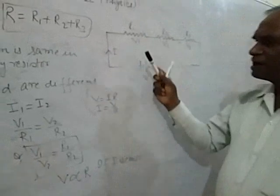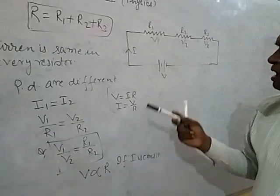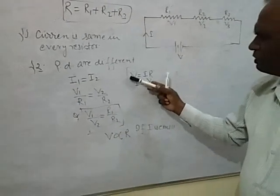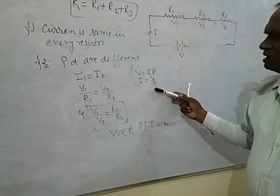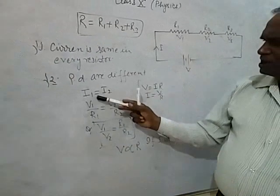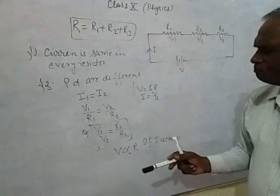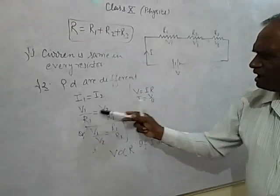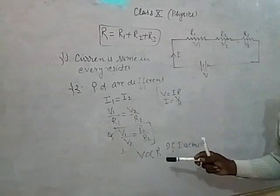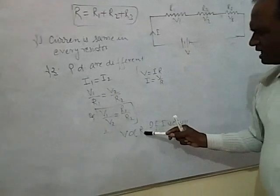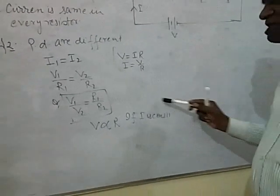I1 equals I2. Ohm's law apply. I1 R1 equals I2 R2. I1 by I2 equals R2 by R1.